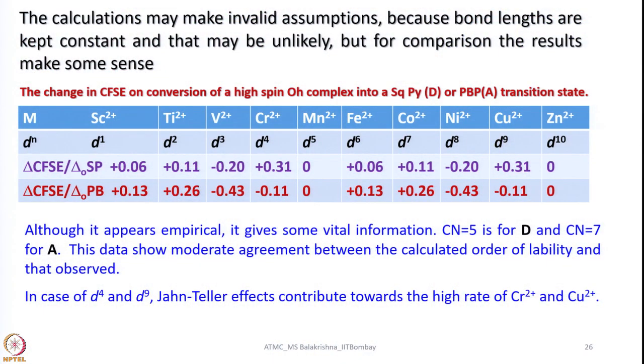The transition state can have either 5-coordination or 7-coordination, and how the CFSE varies matters for delta H hash. A loss of CFSE indicates an increase in the activation energy and hence a decrease in rate. The splitting of d orbitals depends on the coordination geometry, so we can calculate the change in CFSE on formation of a transition state. I have given the change in CFSE on conversion of a high spin octahedral complex into a square pyramidal complex for the dissociative pathway, or a pentagonal bipyramidal intermediate for the associative pathway.